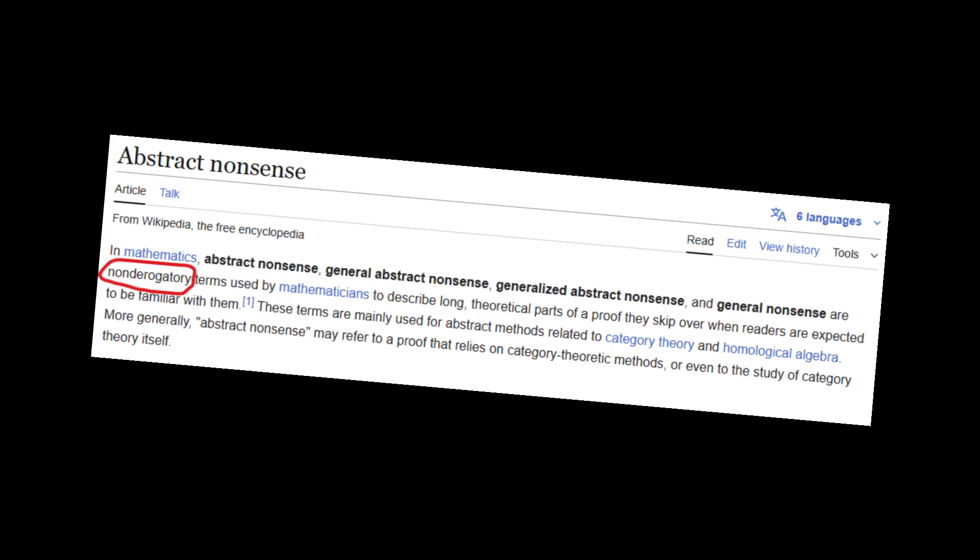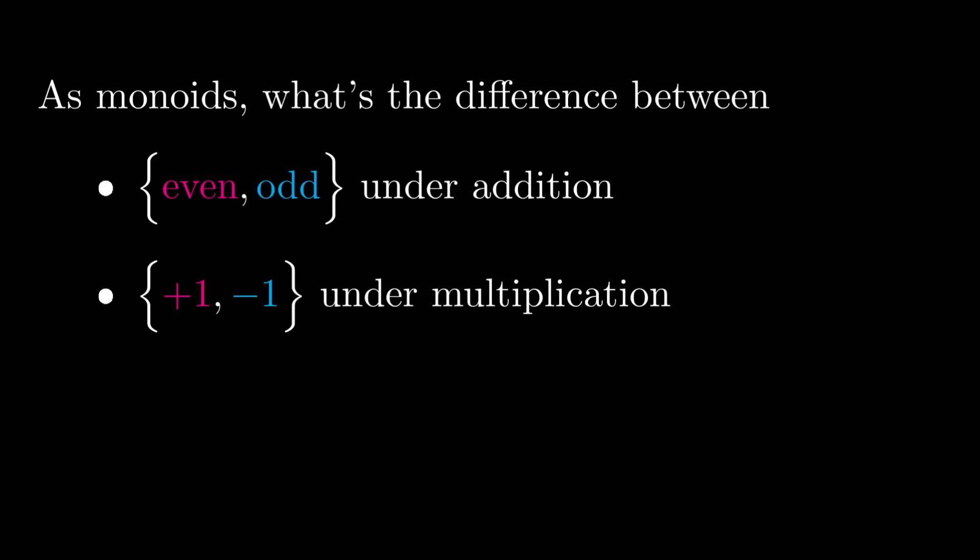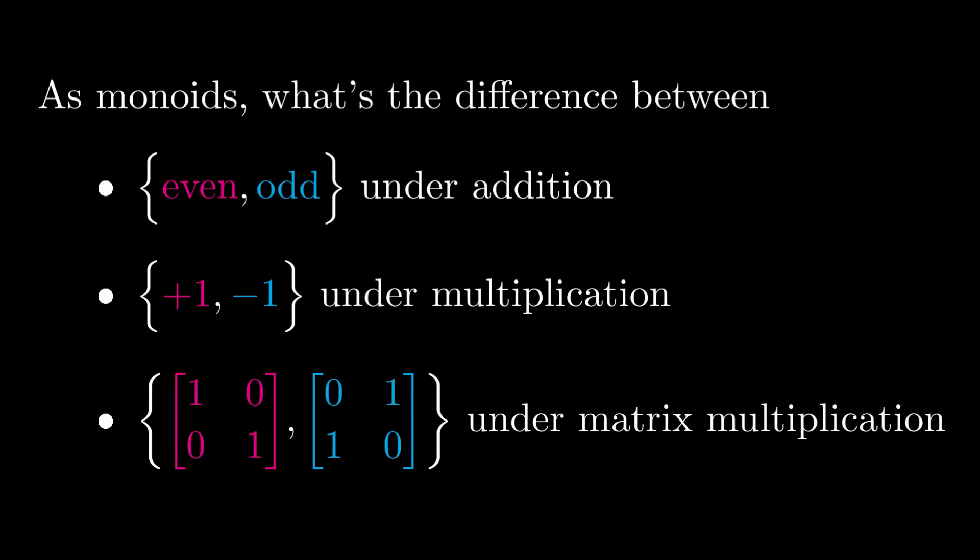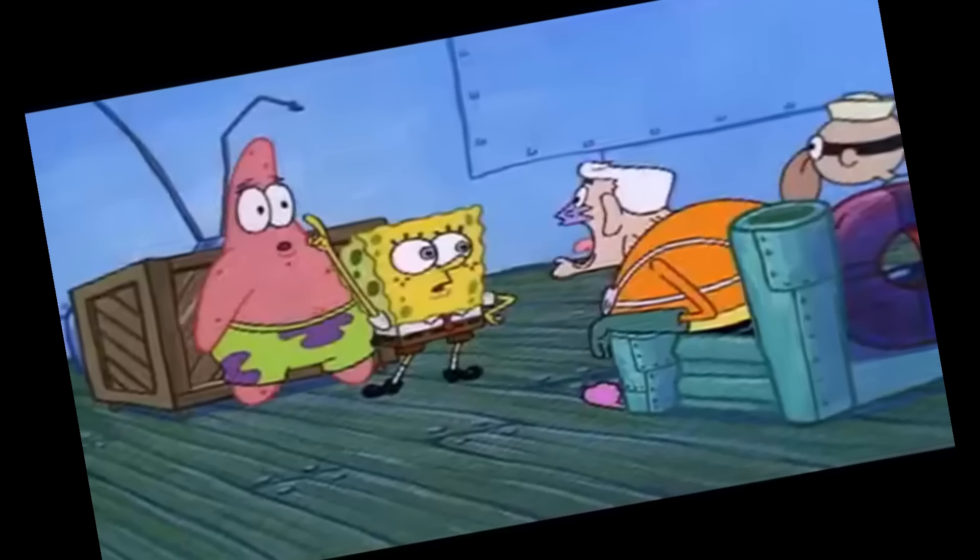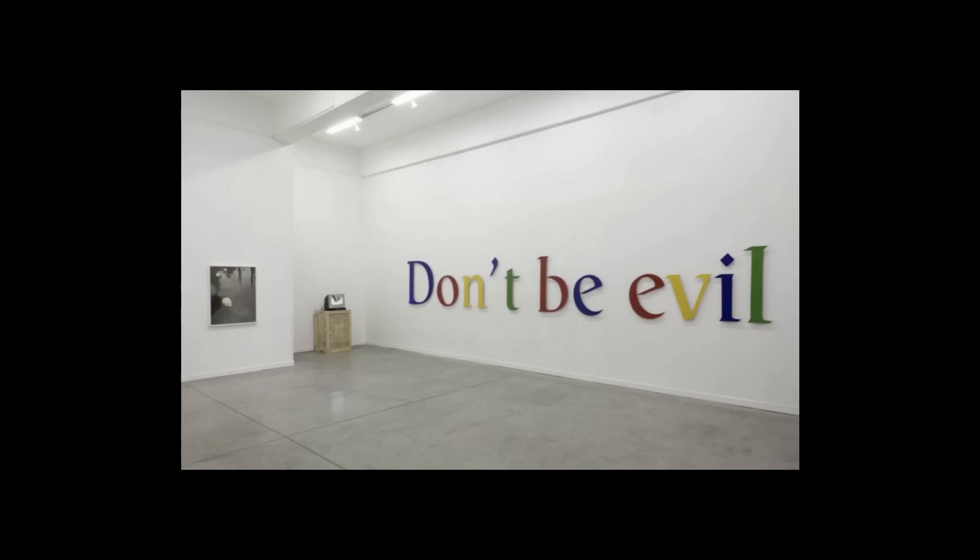I know this sounds like philosophical nonsense, but don't be ridiculous. This is categorical nonsense. Riddle me this. As monoids, what's the difference between even and odd numbers under addition, plus and minus one under multiplication, and the following two matrices under matrix multiplication? I mean, sure, they aren't strictly the same, but as far as their monoid structures are concerned, they're pretty indistinguishable. Their operation tables are identical in shape. The only way you can really tell these things apart is by using non-monoidy language, which, for our purposes, is... Assuming we don't want to be evil...